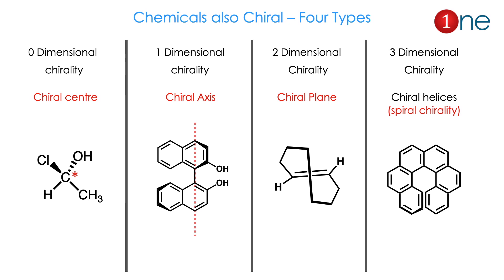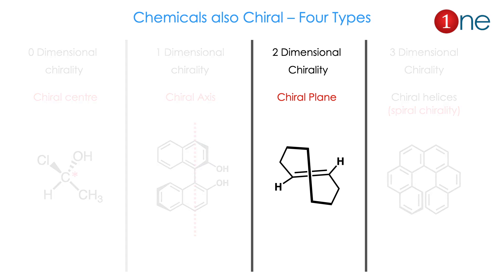Chirality is divided into four types based on dimension. Zero dimension — a chiral center — is a carbon attached to four different atoms. One dimension is a chiral axis, where allenes, biphenyls, and binaphthyls fall. Two-dimensional chirality involves a chiral plane — that is our interest today. Three-dimensional chirality involves chiral helices with spiral structures. Today our interest is specifically the chiral plane, particularly cycloalkene. Trans-cycloalkene is chiral due to its chiral plane, and we will see how to assign R and S configuration.